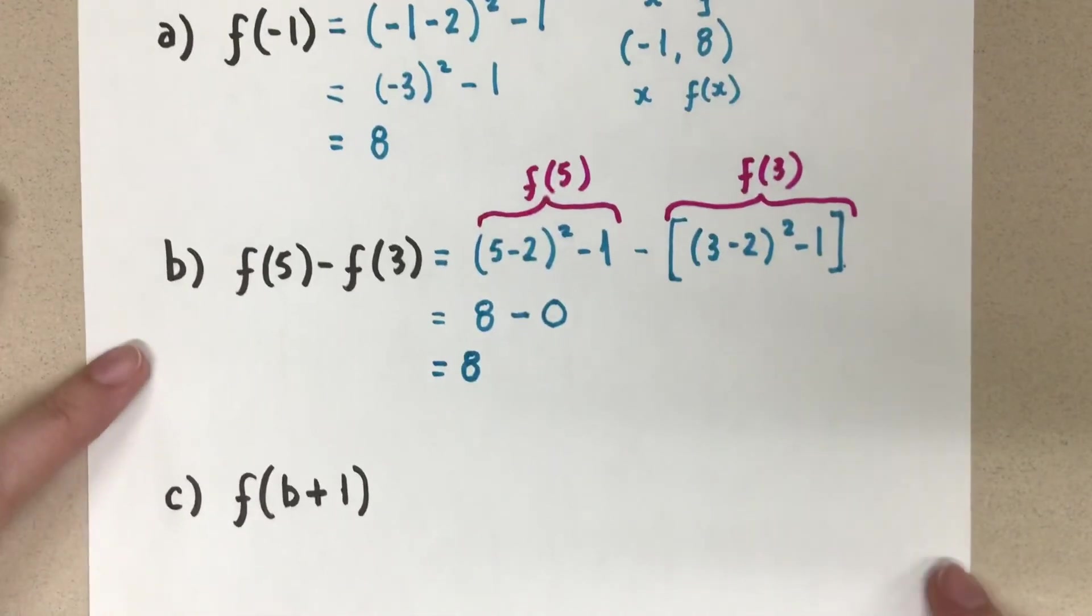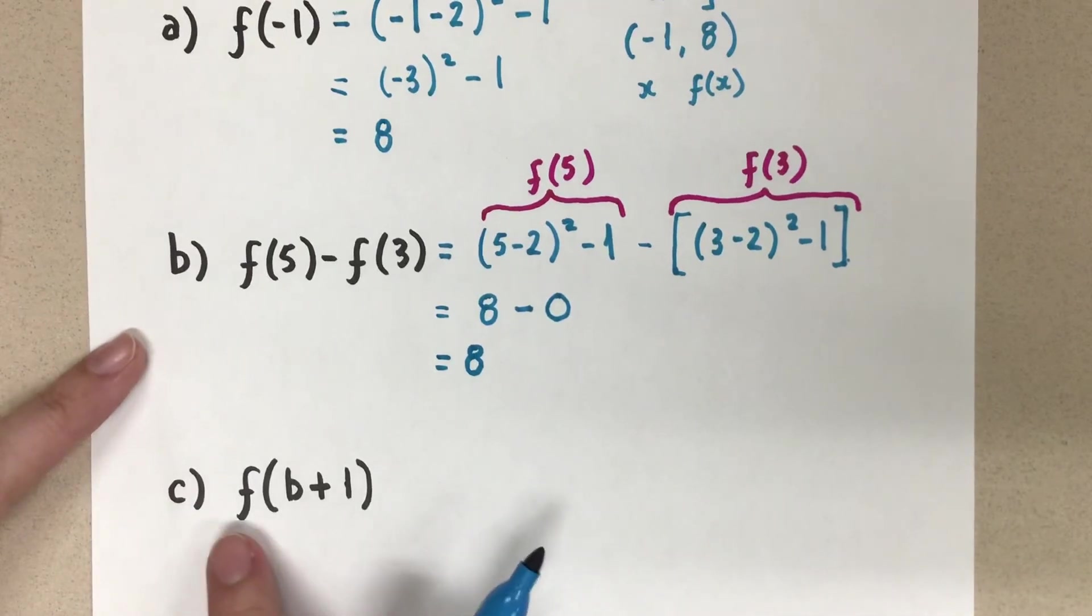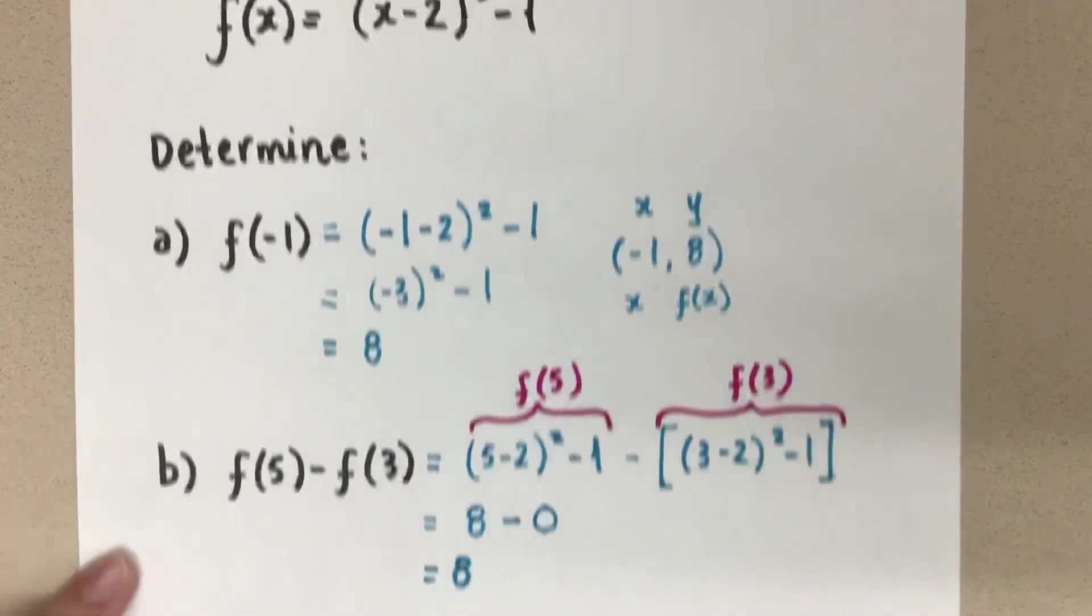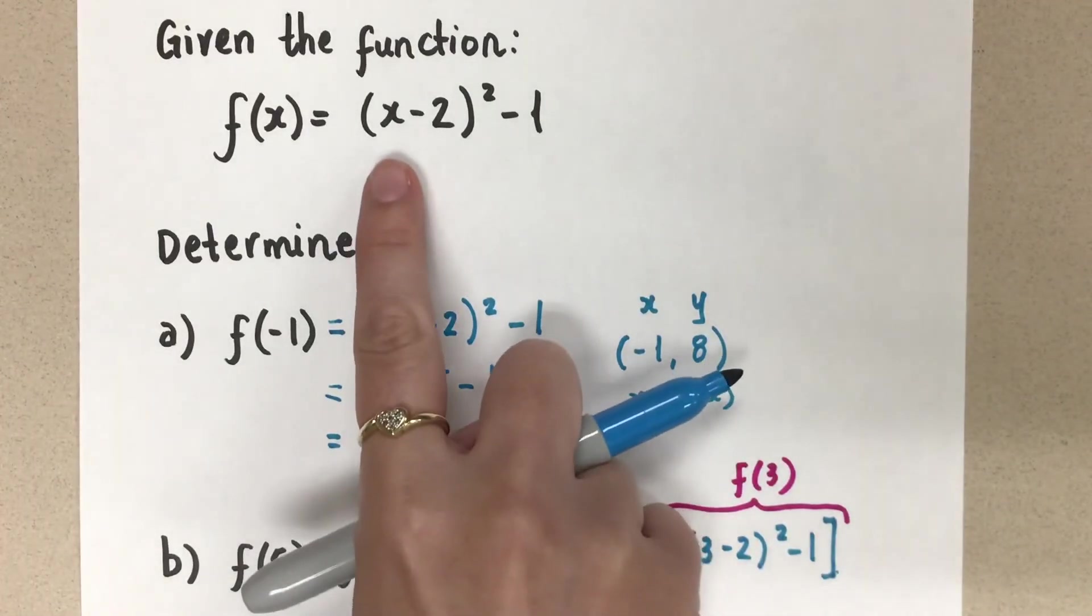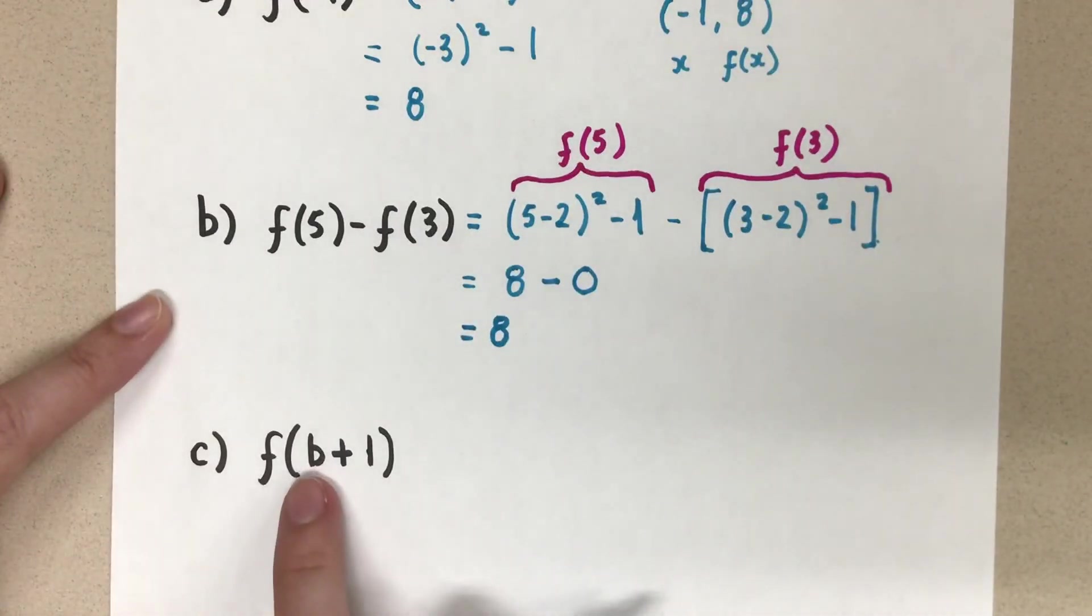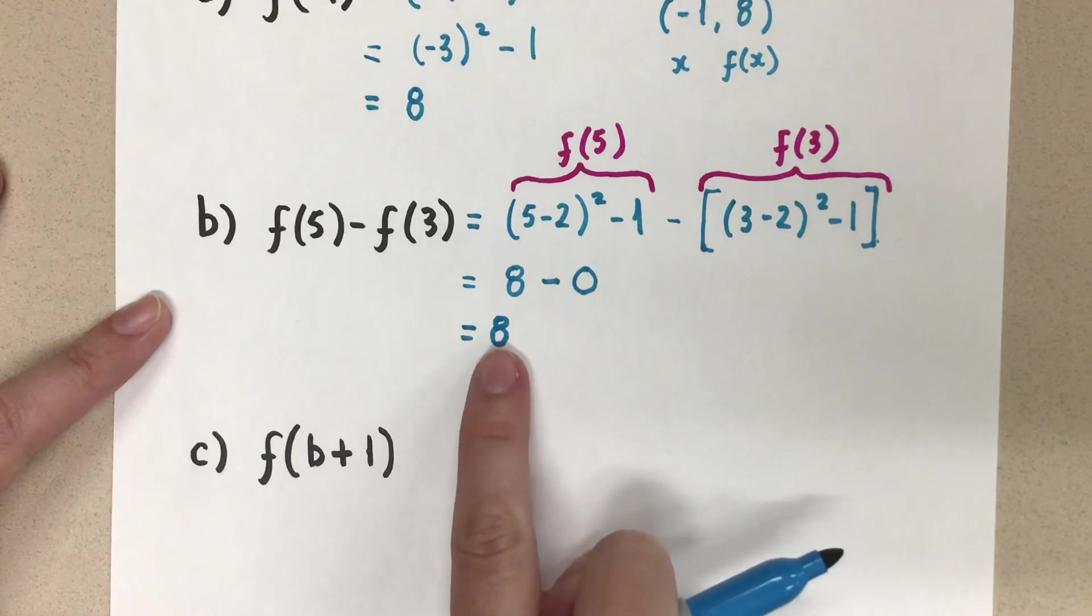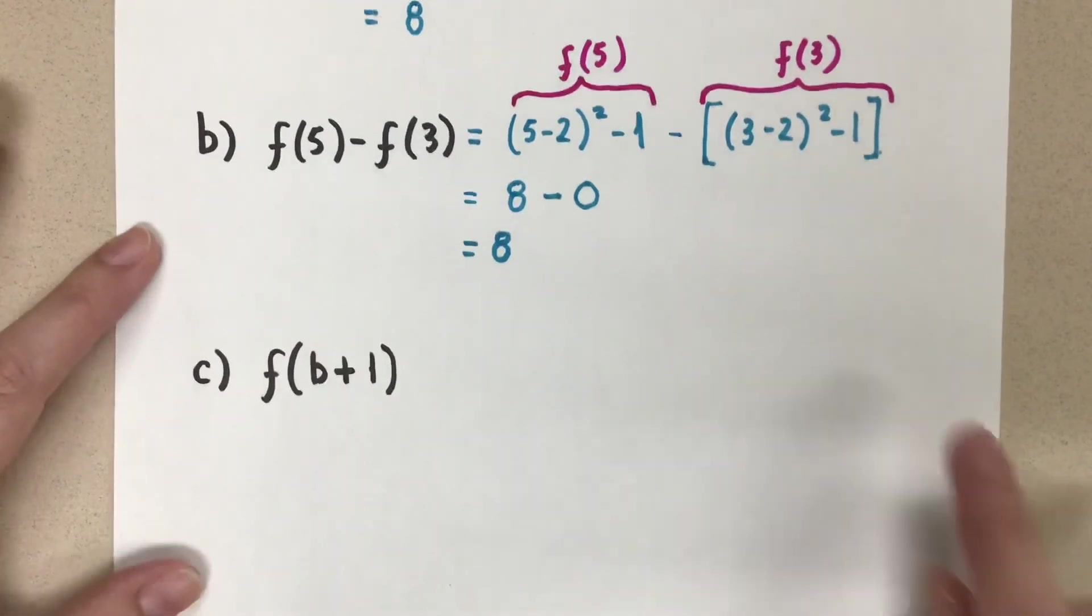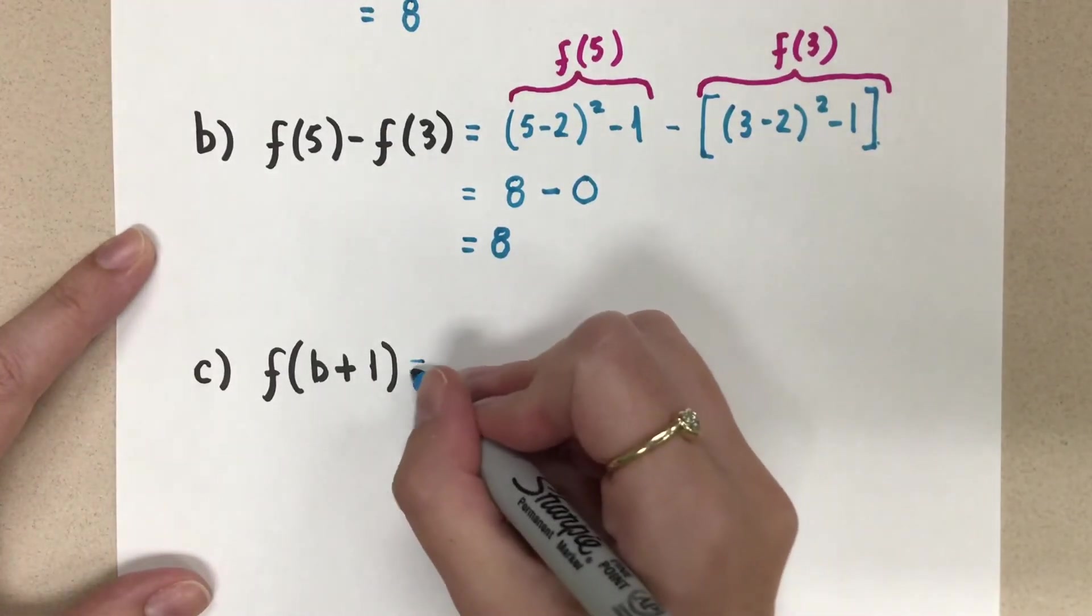All right. And let's look at the last one that I have here. So this is a little different. Now we have f at b plus 1. So this means that b plus 1 needs to replace the x in the equation. And then we're going to evaluate. But because we're subbing in something with a variable, the b, we're not going to get a final number like we got before. Our final answer will have the b in it still. So don't be concerned about that.